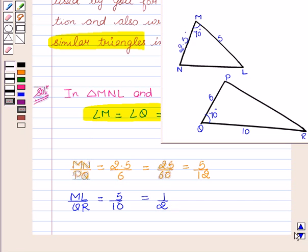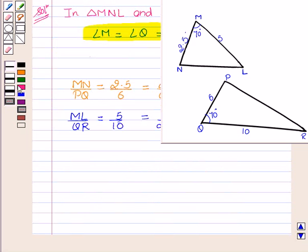Here we see that the ratio of the two sides are not equal. That is, MN upon PQ is not equal to ML upon QR.